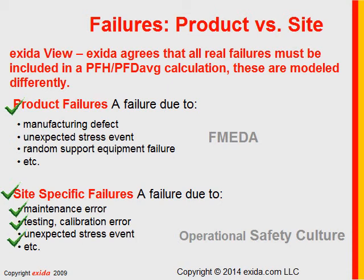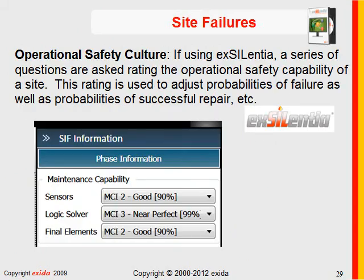The Exeter view is that all real failures must be included in a realistic PFD calculation, but we model them differently. We use the term 'operational safety culture.' We have a method to evaluate the operational safety culture of a company and use that model in our Excelentia tool to adjust failure rates, probabilities of successful repair, probabilities of successful proof tests, and other variables impacted by site-specific policy. This more accurate modeling gives credit to those doing a good job and properly penalizes those who are not.